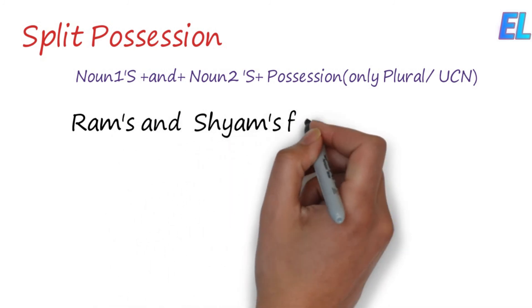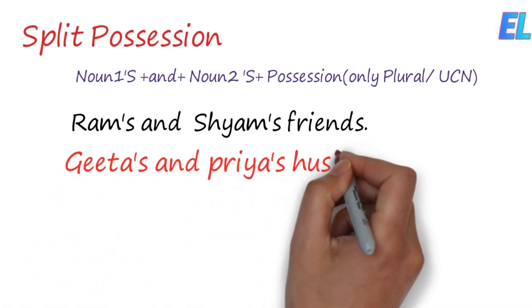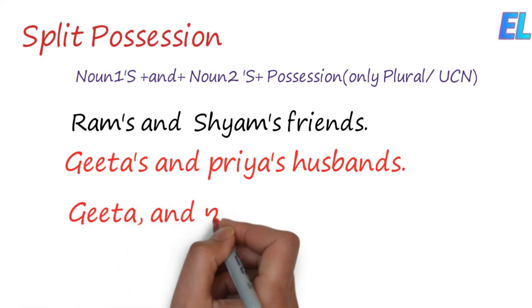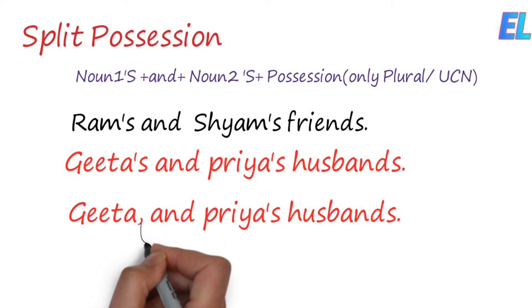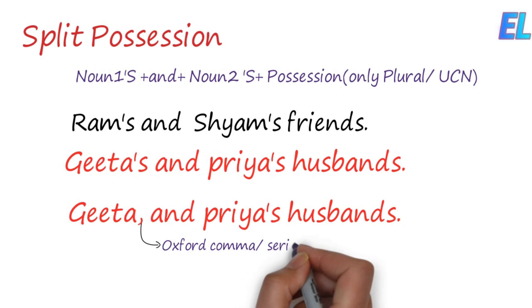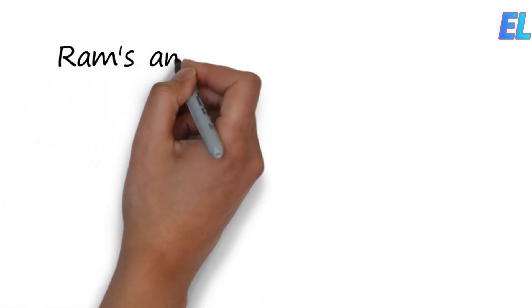Rams and Shams' friends — clear? Now, Gita's and Freya's Husbands — this is a split position because each has a separate apostrophe-S. These are called an Oxford comma or serial comma. If you use an Oxford comma and serial comma, the choice will be changed.